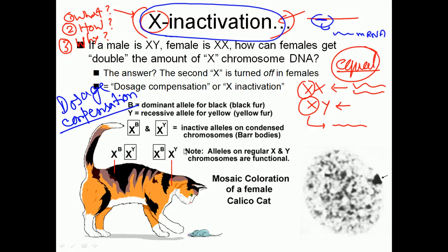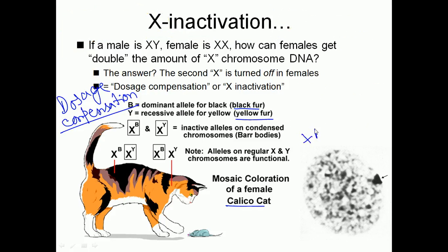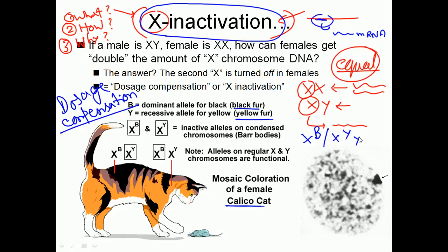The classic example is Calico cats. If you see some cats, they have a patchy appearance — black fur, brown fur, different regions. Here, capital B is the dominant allele for black fur, while lowercase y is the recessive allele giving yellow fur. In male cats (XY), the X can carry either B or yellow. If it is X-B-Y, it will be completely black; if X-Y, it will be completely yellow.